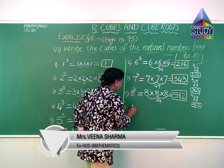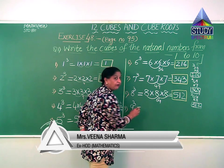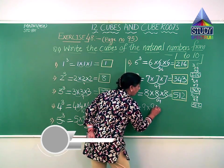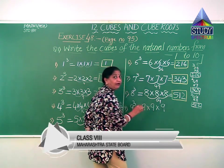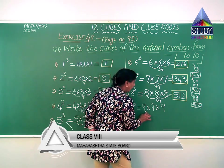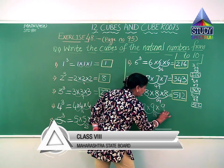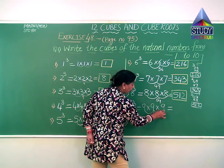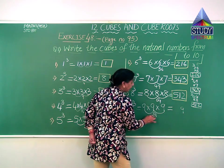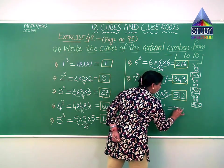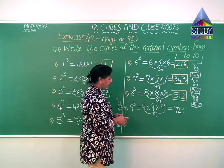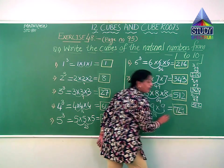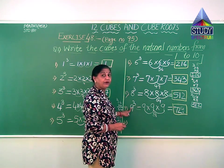Next is 9 cube — we have to multiply 9 three times, as it is raised to 3. 9 into 9 is 81. Then 81 into 9: 9 ones are 9, 9 eights are 72. So the answer is 729. It is the cube of 9.